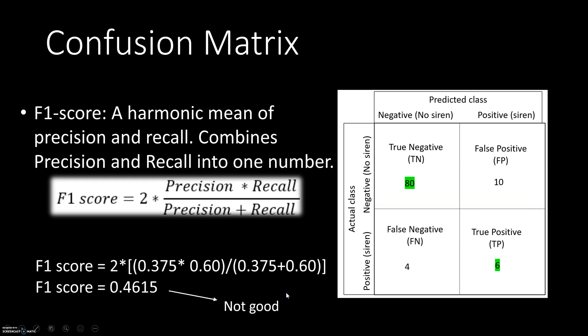The next measure is the F1 score. Precision and recall give us better metrics, but it's even more convenient to have a single number — that's where F1 score helps. F1 score is the harmonic mean of precision and recall. If both precision and recall are high, the F1 score will be high; if either is low, the F1 score will be low. We want the F1 score to be high, meaning the model is performing well. The scale runs from 0 to 1, and closer to 1 is better. Since our precision was quite low in this example, the F1 score is also quite low.